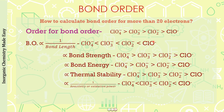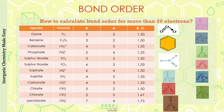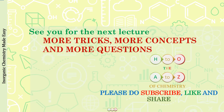Bond order helps you predict thermal stability, bond strength, bond energy, reactivity, and oxidizing power — all from four easy tricks. A list of practice species is provided for which you can calculate the bond order and check your answers; the structures are also given so you can verify your structure drawing. That would be the end of this discussion. Please subscribe to the channel, click thumbs up if you liked the lecture, and share it with your friends. See you again — have a nice day, God bless you.